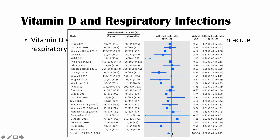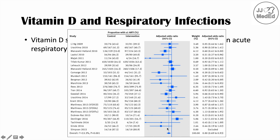This line represents an adjusted odds ratio of one. Anything to the right of this line is above one, and anything to the left is below one. Anything above one means there is a positive association — more respiratory tract infections with vitamin D supplementation. Anything to the left means a negative association — as vitamin D is supplemented, there is a decrease in respiratory tract infections. As you can see, there is quite a variation. Some studies show an increase, but for the most part, most show a decrease in respiratory tract infections with vitamin D supplementation.